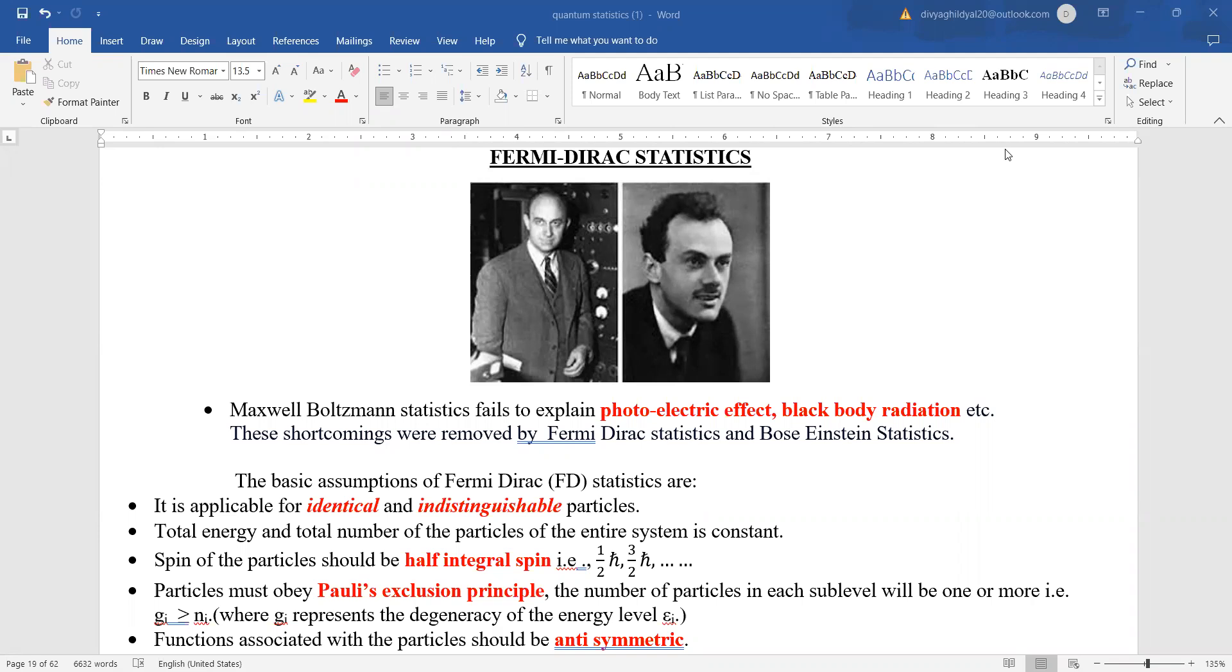What were the major drawbacks of Maxwell Boltzmann statistics and how it all gave rise to quantum statistics. The two major portions of quantum statistics are Fermi Dirac distribution and Bose-Einstein statistics. So please subscribe to the channel before continuing to hear the lecture series.